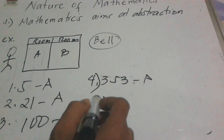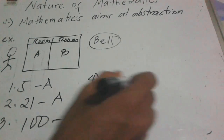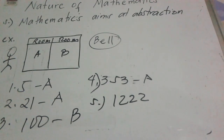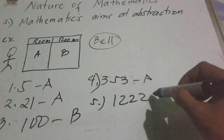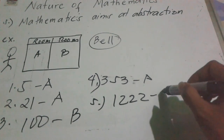Last: suppose the bell rings one thousand two hundred twenty-two times — where is Pedro? Pedro is tired because the bell rang one thousand two hundred twenty-two times and he kept switching rooms. The answer is: if the bell rings one thousand two hundred twenty-two times, Pedro is in room B.